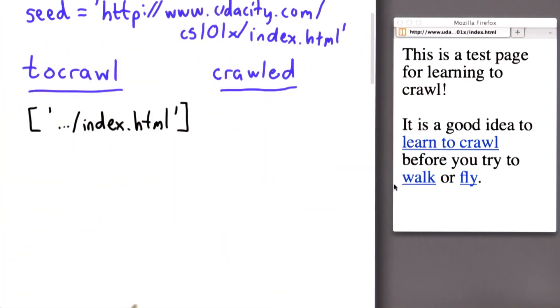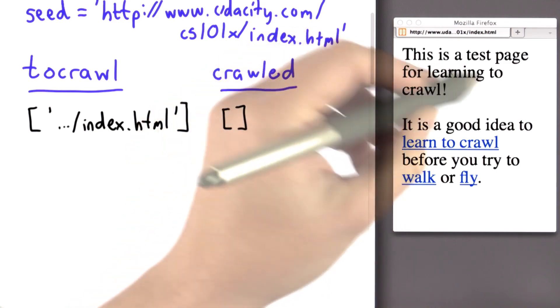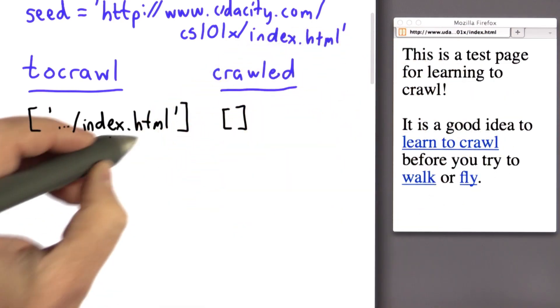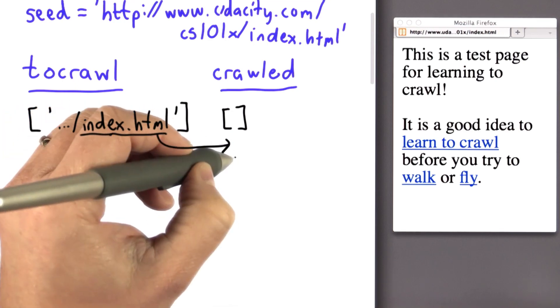We haven't crawled anything yet. We're just getting started. So crawled will start out as the empty list. The next thing we're going to do is crawl this page. So we'll get all the links on this page. That means we've crawled the index page. So that will now be added to crawled.